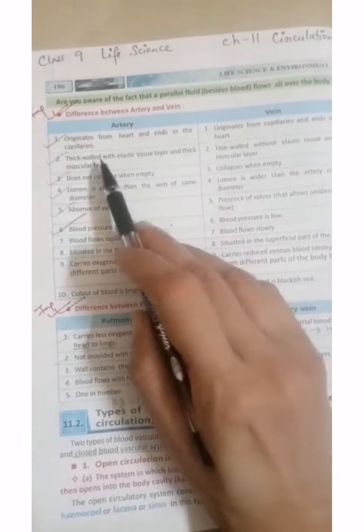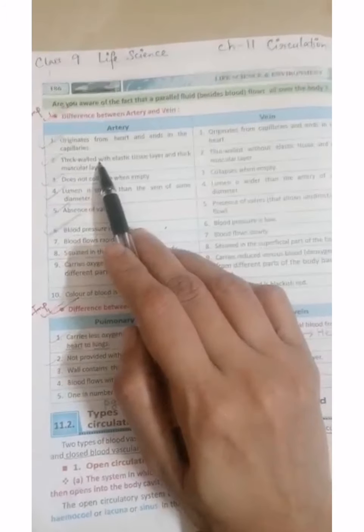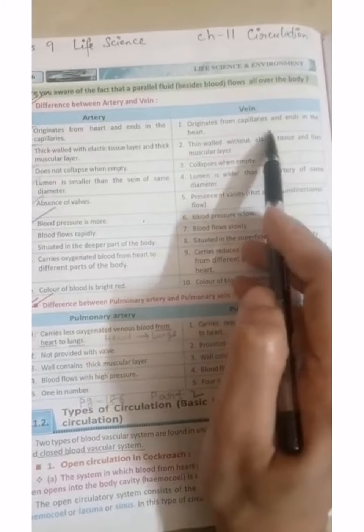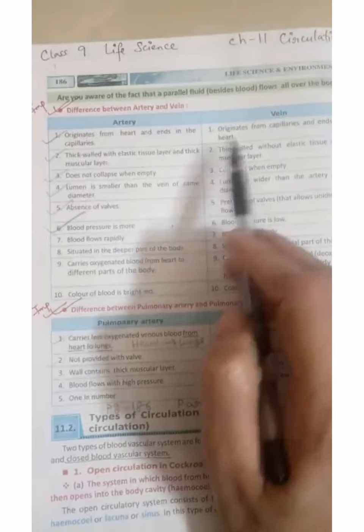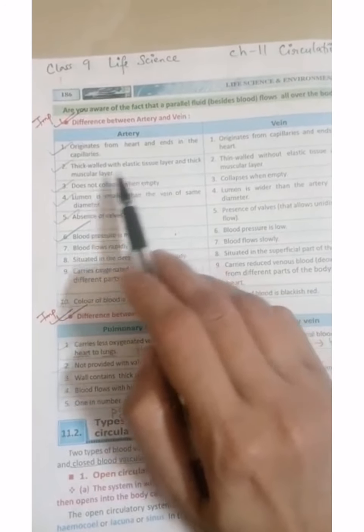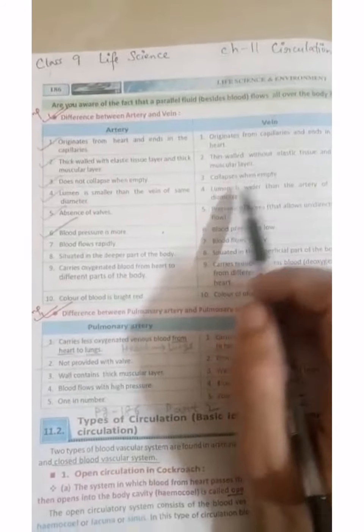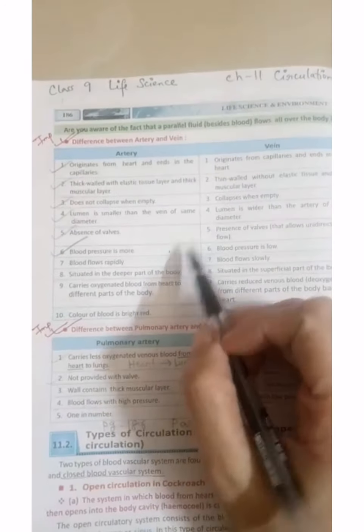Artery and vein, first difference. Artery originates from heart and ends in the capillaries, and vein originates from capillaries and ends in the heart. Next one, thick walled with elastic tissue layer and thick muscular layer. That is, it has thick walls, and vein has thin walls. These six points you have to remember.